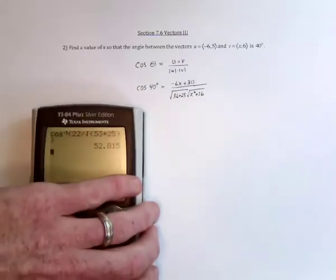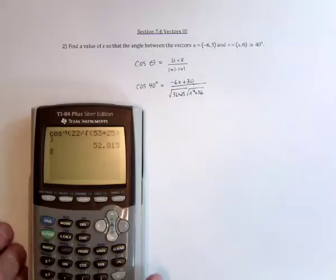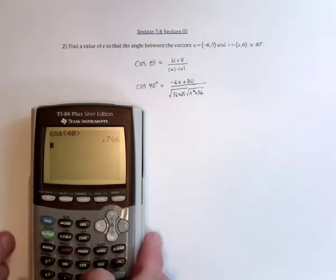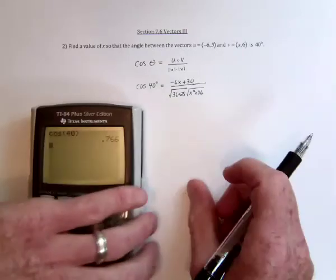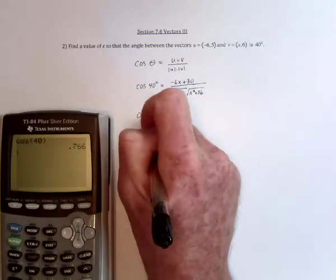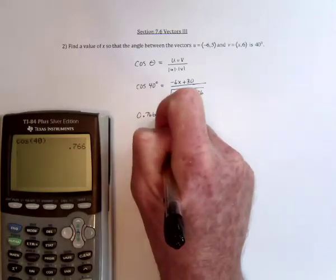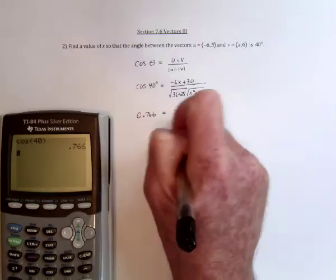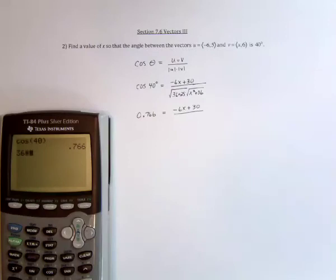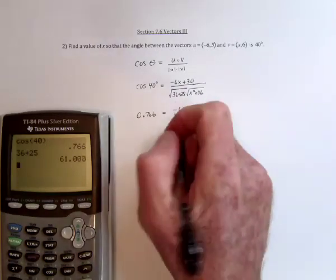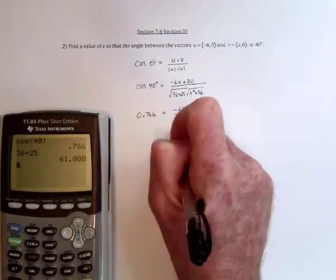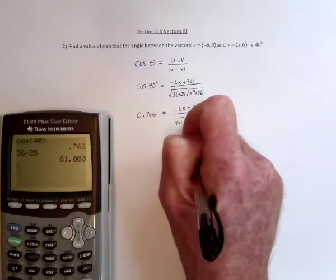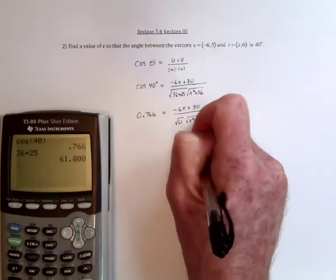So there is the cosine of 40, 0.766. There is the square root of 61, and then the square root of x squared plus 36.